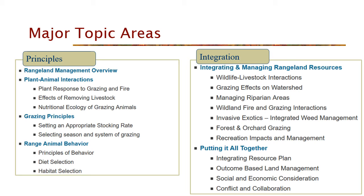The second part of the class is all about integrating those things. How can we use livestock to manage wildland fuels? How can fire affect grazing? What about invasive and exotic species — how do those influence rangeland health and what can we do about it? I'm also getting more into recreation and trying to understand how people experience rangelands through recreation and what those impacts are.